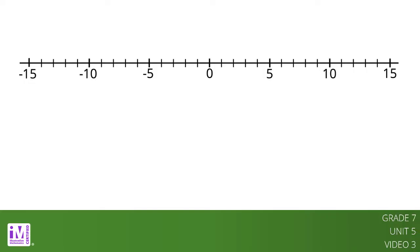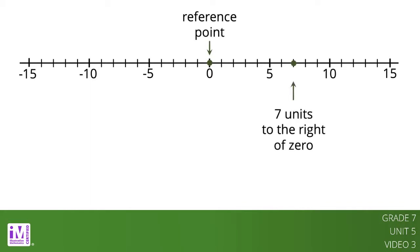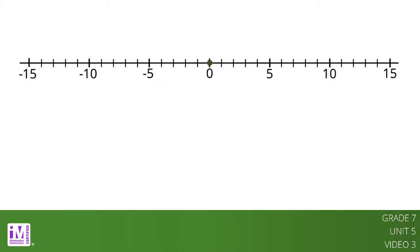We can use signed numbers to represent the position of an object along a line. We pick a point to be the reference point and call it zero. Positions to the right of zero are positive, and positions to the left of zero are negative. With this setup, we can use signed numbers to describe which direction something is moving. When we combine speed with direction indicated by the sign of the number, it is called velocity.